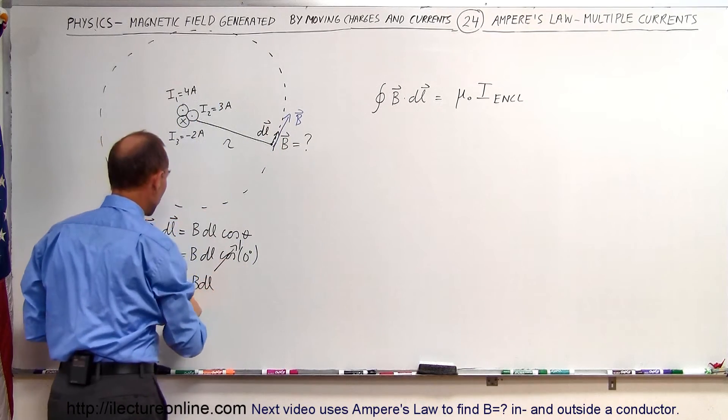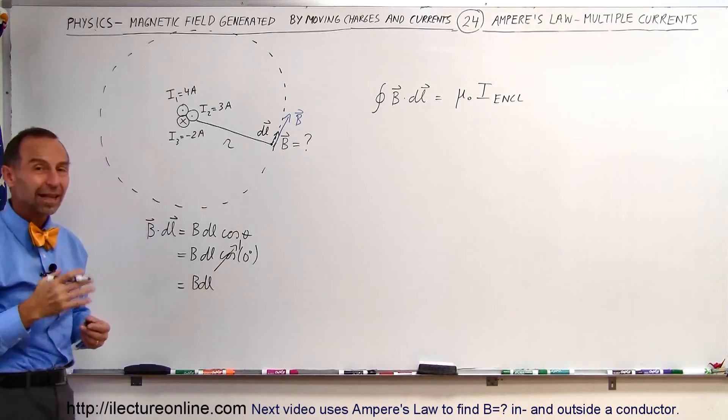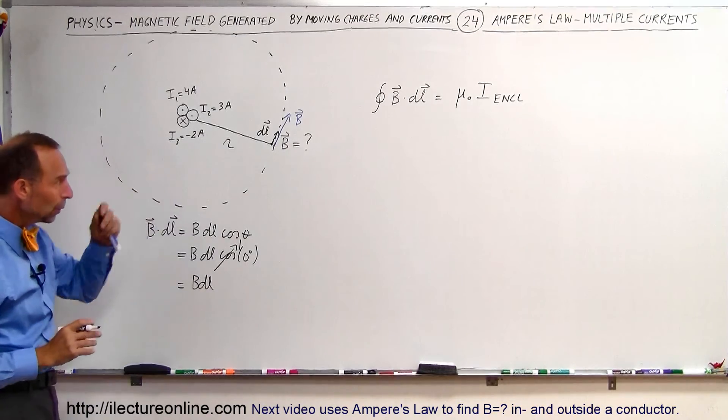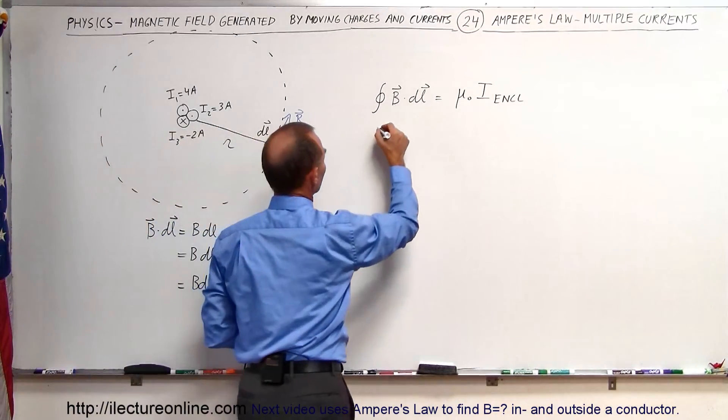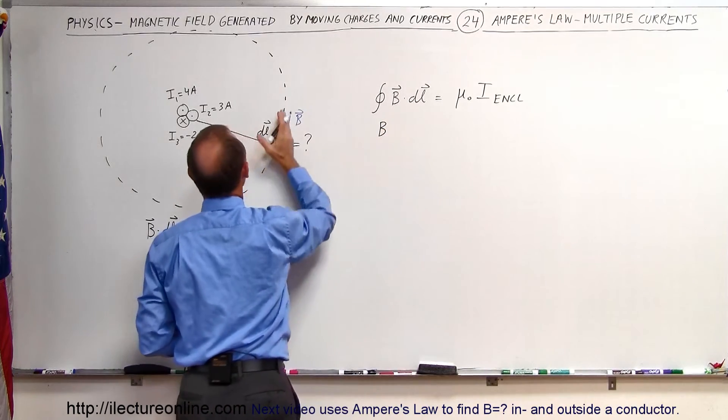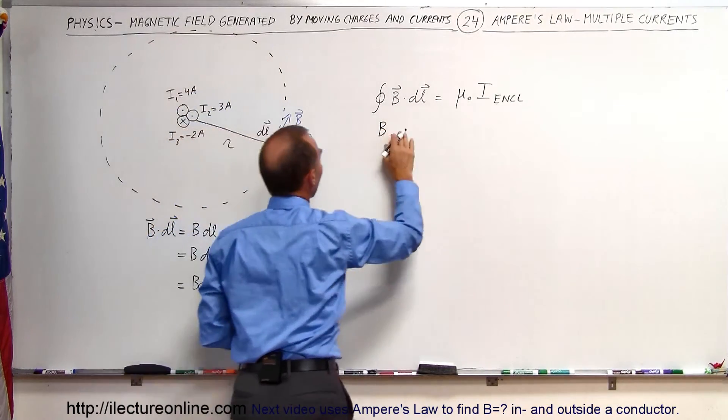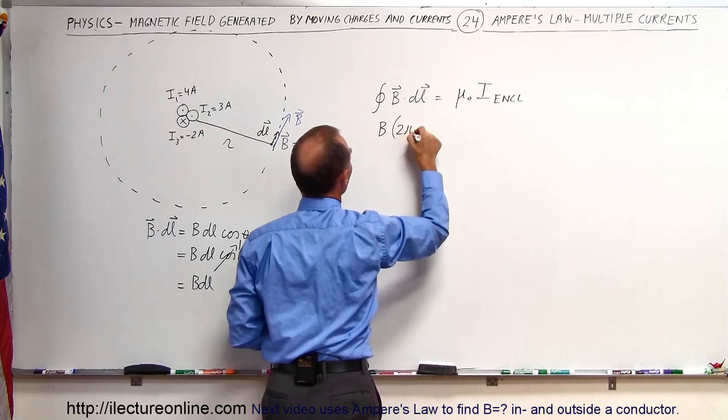Total integral around that is going to be simply B times the length of the path. We can then plug that in there, and so therefore the strength of the magnetic field will be the same all the way around the circle times the path that we took, which is 2 pi times R.